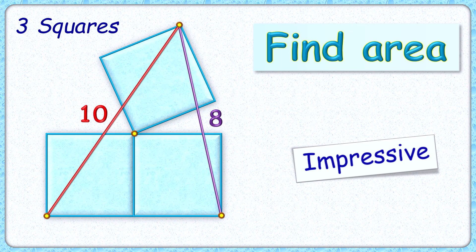Wow, this impressive question! Given are three congruent squares and the length of this red and purple line segment as 10 and 8 centimeter. Exciting part is with this limited data we have to find area of each of these squares.